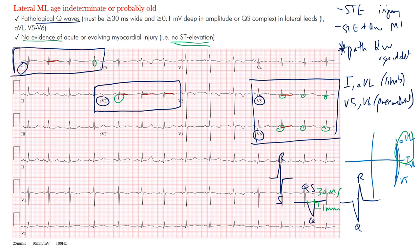In leads I and AVL, clearly you have that lateral MI with those deep Q waves. Notice also that there is no evidence of any ST segment deviation — there's a flat ST segment here, no deviation. This patient had already had an infarct in the past and was just presenting for follow-up. The main findings you're looking for are pathological Q waves and no evidence of acute or evolving myocardial injury — meaning no ST segment deviation — in the lateral leads: I, AVL, V5, and V6. In this case, they were most prominent in I and AVL.